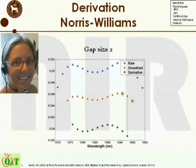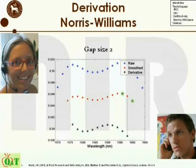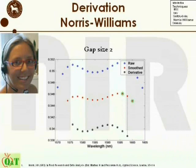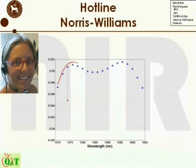Pre-processing of NIR — in Norris-Williams derivation, what is the gap for? Can't you just always use a gap size of one? The best way to dig into this excellent question is to look at what is actually happening during smoothing and the subsequent derivation. If the smoothing is performed using five points, two points on each side of the point to be smoothed are used for averaging. If then we use a gap size of one, it means that we simply find the difference between these two adjacent measurement points in the smooth spectrum.